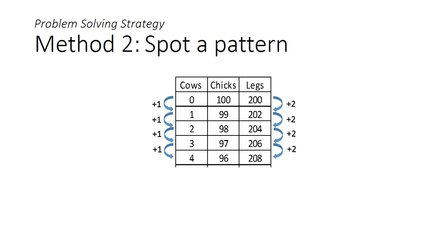Given that you need 86 more legs than the 0 cows scenario, you could reason that you need 43 cows in total.